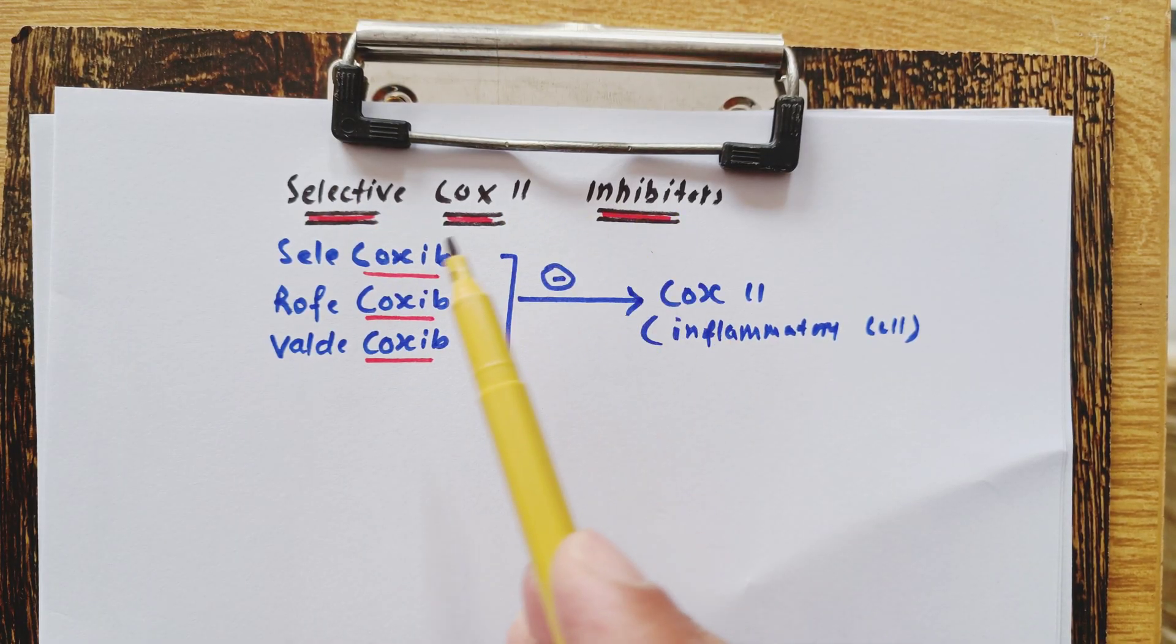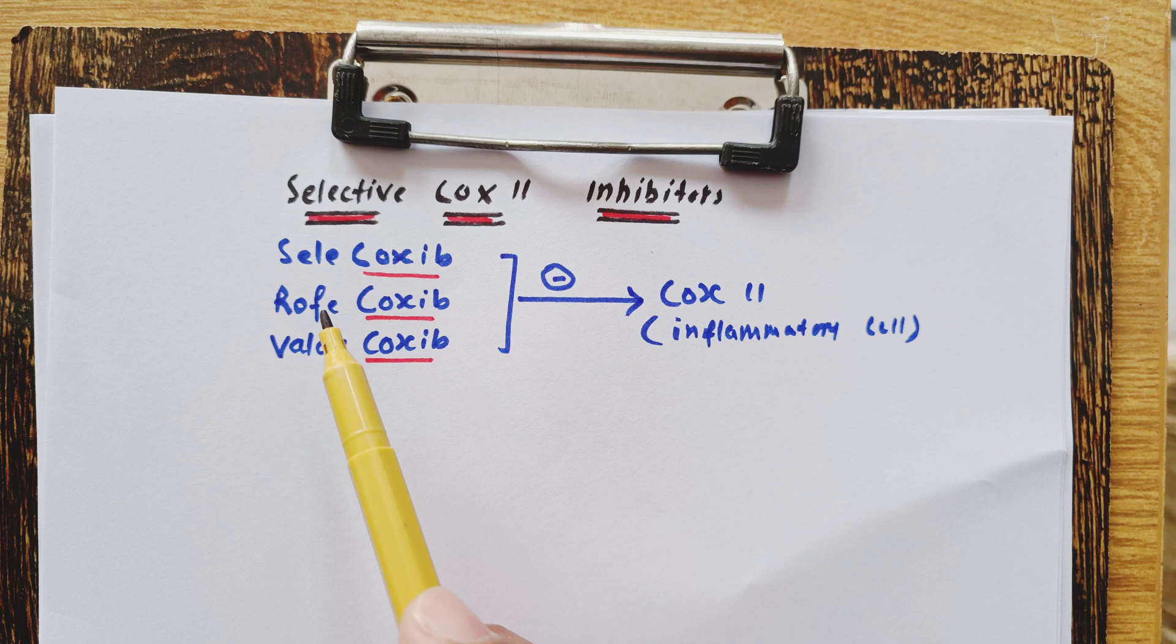Selective COX-2 inhibitors: celecoxib, rofecoxib, and valdecoxib. Just see the word 'coxib'. These are selective COX-2 inhibitors.